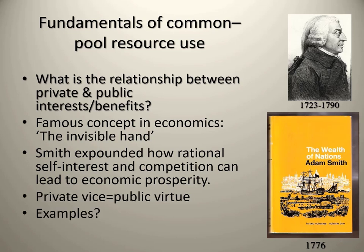This is what the invisible hand is — the idea that private vice in seeking your own self-interest rationally will trickle down into benefits for the rest of society. In economics, if you allow individuals to seek their own self-interest unregulated — seeking economic profit unregulated — this will benefit society as a whole. This is trickle-down economics, Reaganomics: give the money to the top and those people will create businesses, new technologies, and jobs that benefit all of us.